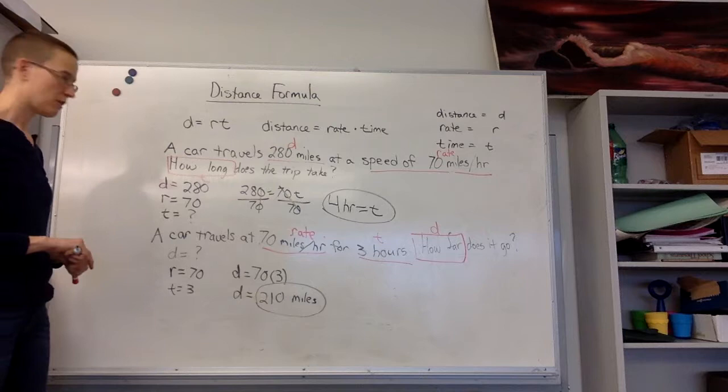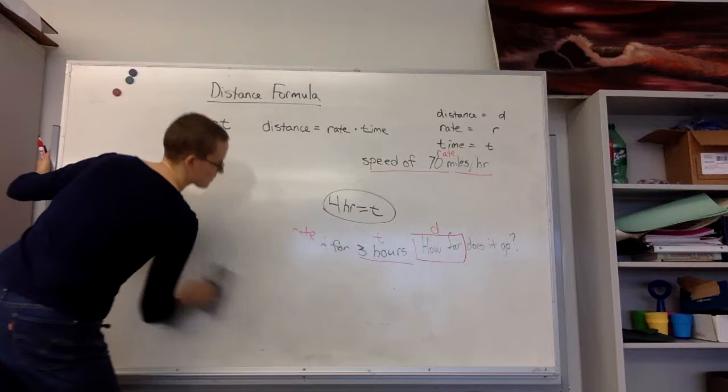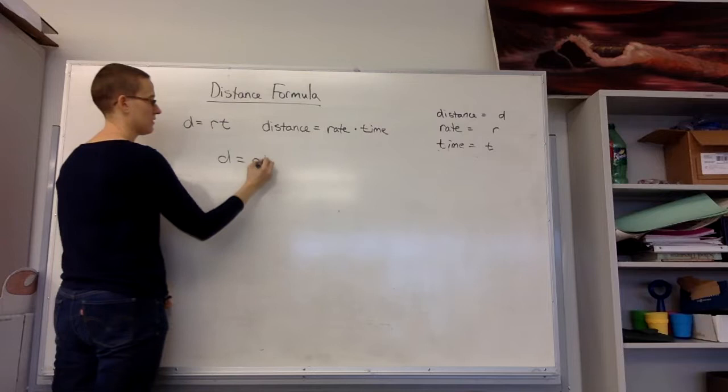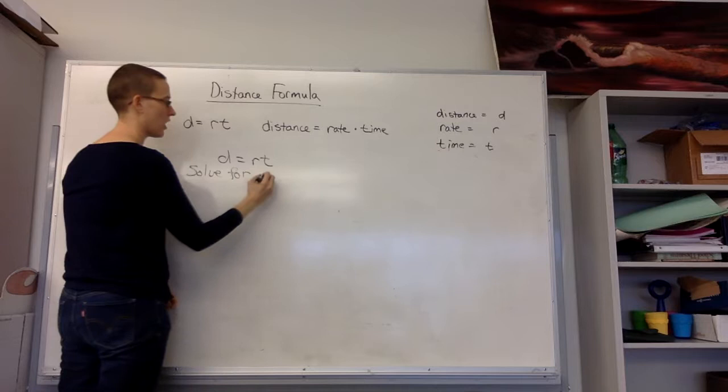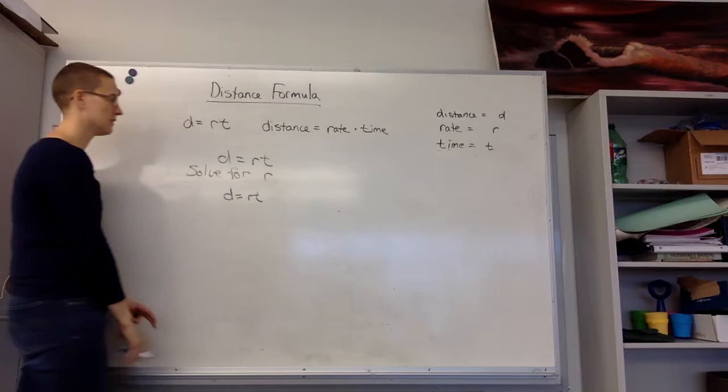Now along with this, it's worth mentioning that sometimes we need to solve an equation for one of the variables in it. So let's take a look at that. We can also solve problems if we just manipulate the equation. Even if there's no numbers in here, if I want to solve this equation for r, for my rate, it means I want the r alone on one side and everything else on the other side.